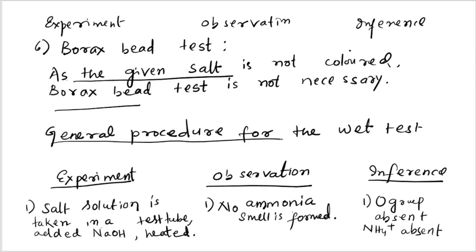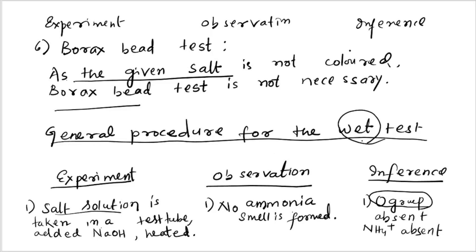After the dry test, we proceed to the wet test. In the general procedure, we need to determine which group the cation belongs to. There are six groups including zero group: 0, 1, 2, 3, 4, 5, 6. First we proceed to zero group — the reagent is NaOH added to the salt solution. No ammonia smell is obtained, so ammonium group is absent, meaning zero group is absent.